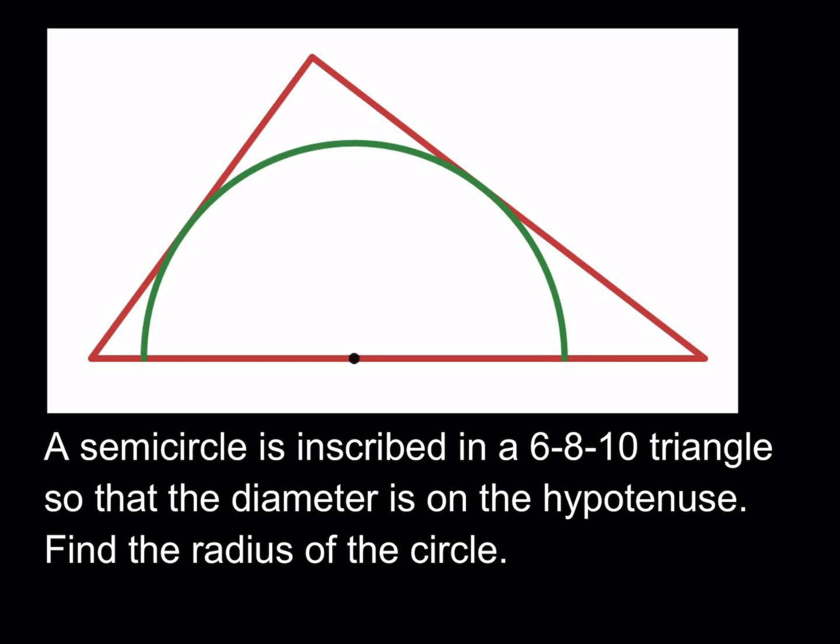Now this seems to be an easy-ish puzzle, hopefully. I'll be presenting two methods. Let's get started now. A semicircle is inscribed in a 6-8-10 triangle so that the diameter is on the hypotenuse. Find the radius of the circle.